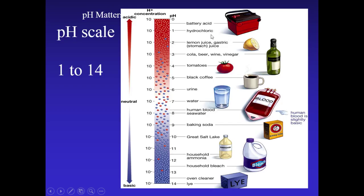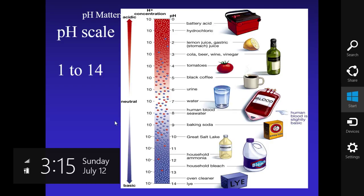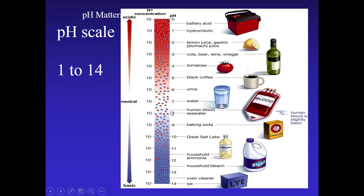Looking at the pH scale, we can see some acidic things in our diet: tomatoes, lemon juice, and coffee. There are also common everyday chemicals on the basic side: baking soda, ammonia, bleach, and lye. If you look at our blood, it is slightly basic at around pH 7.4, which is a slightly basic solution.